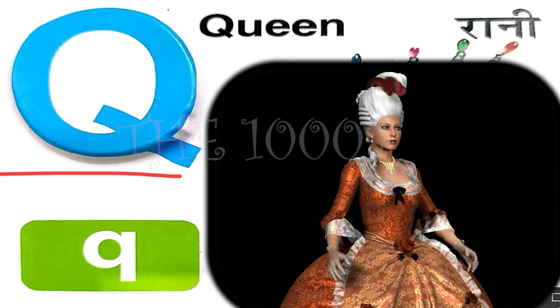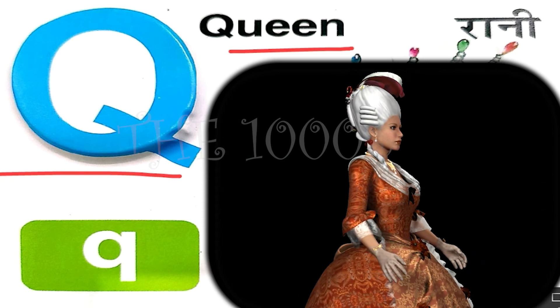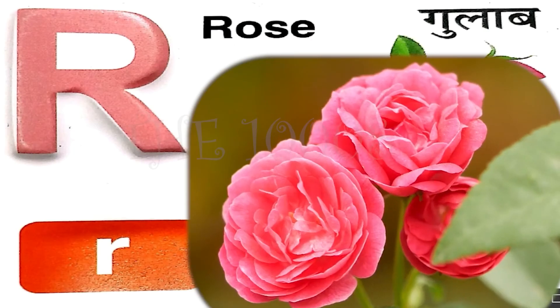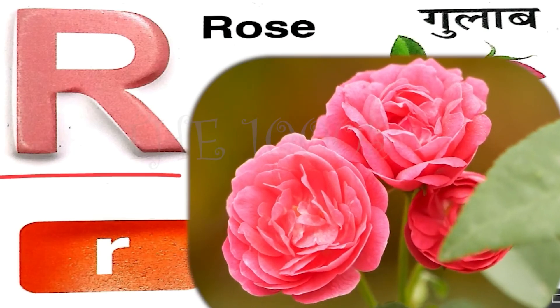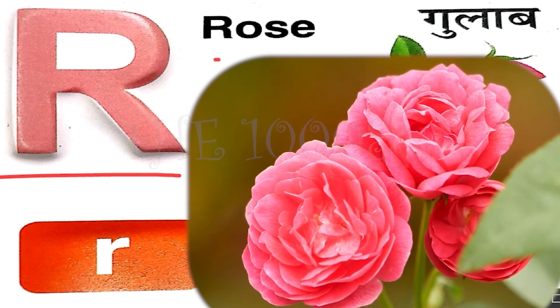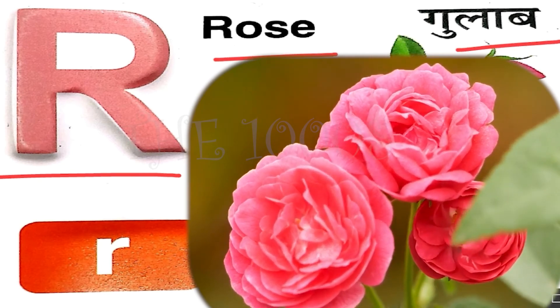Q for queen, queen means raani. R for rose, rose means gulab.